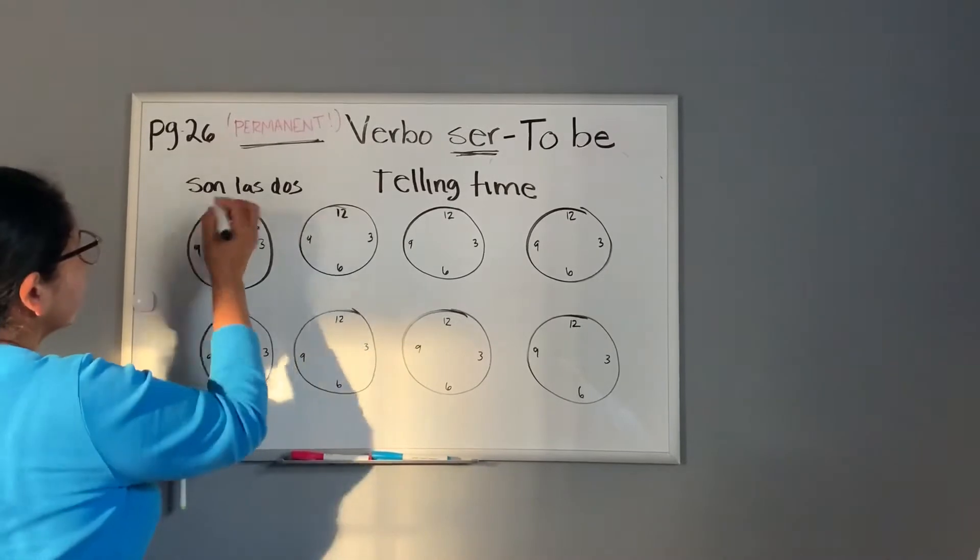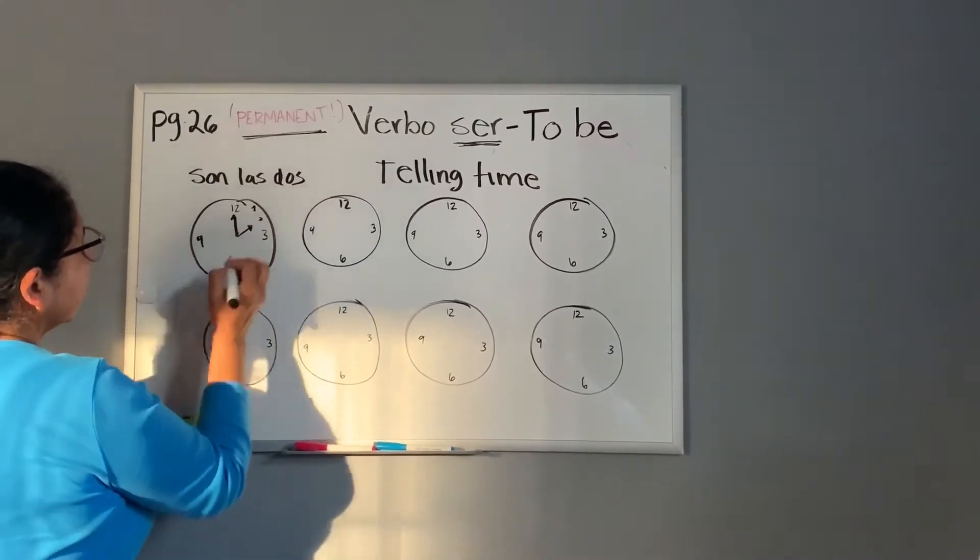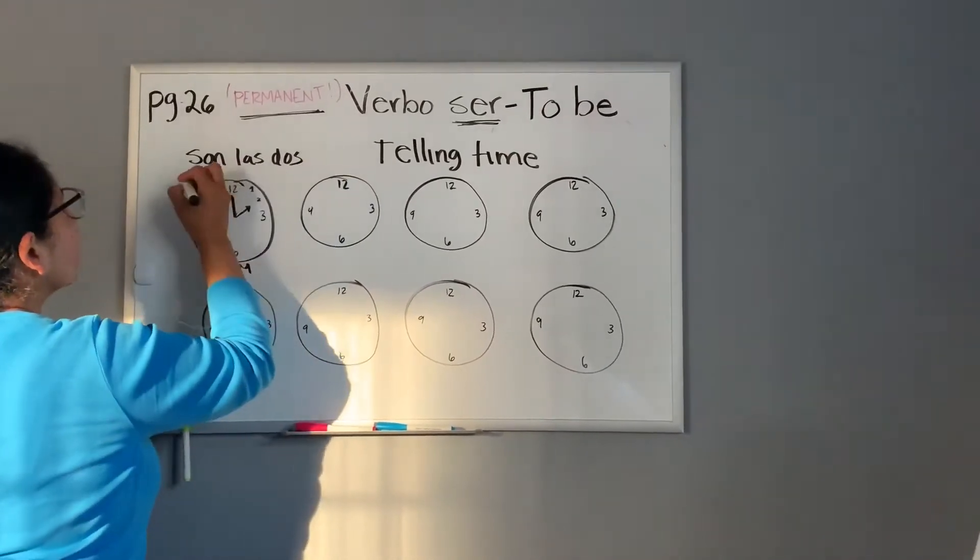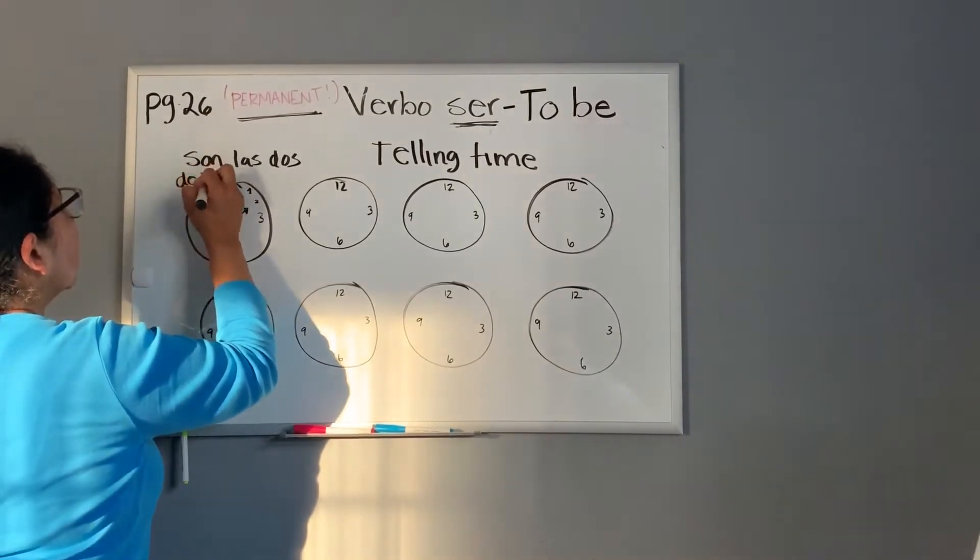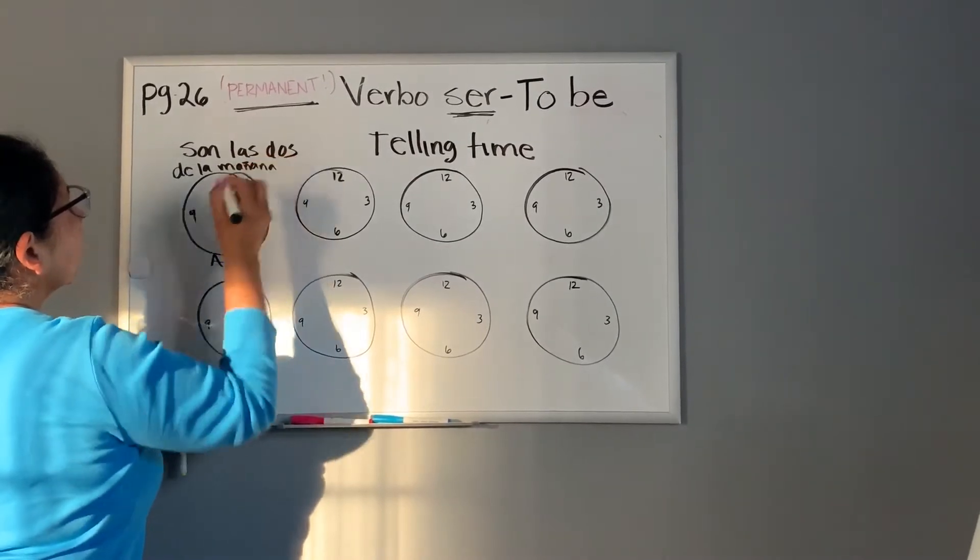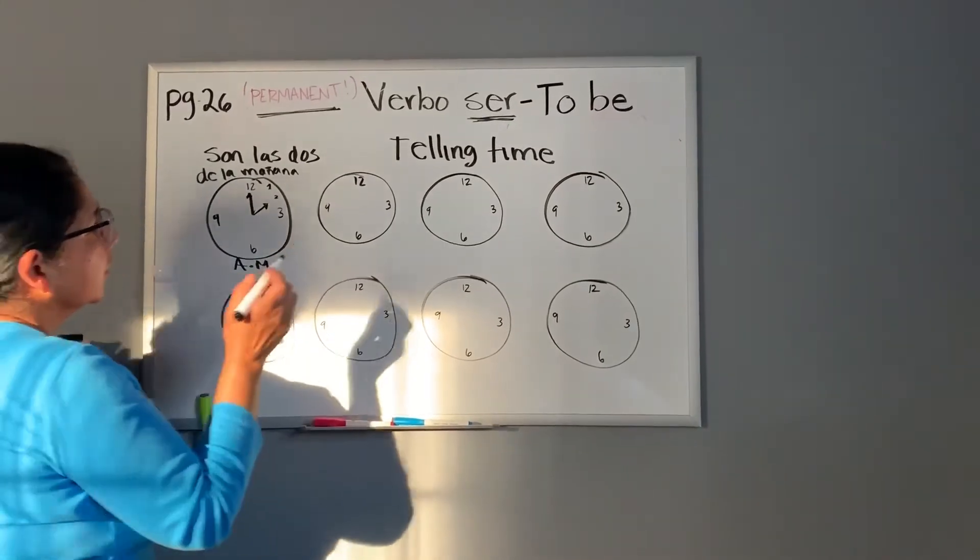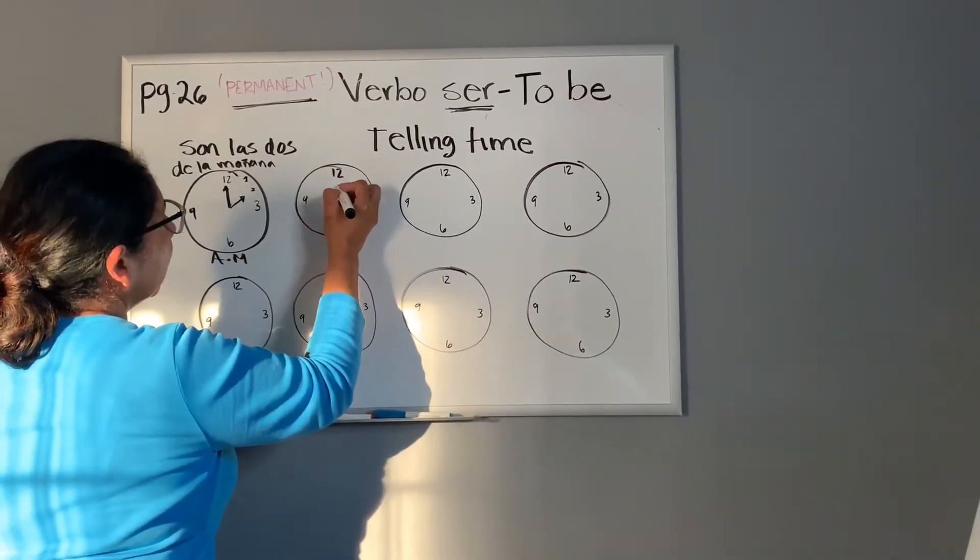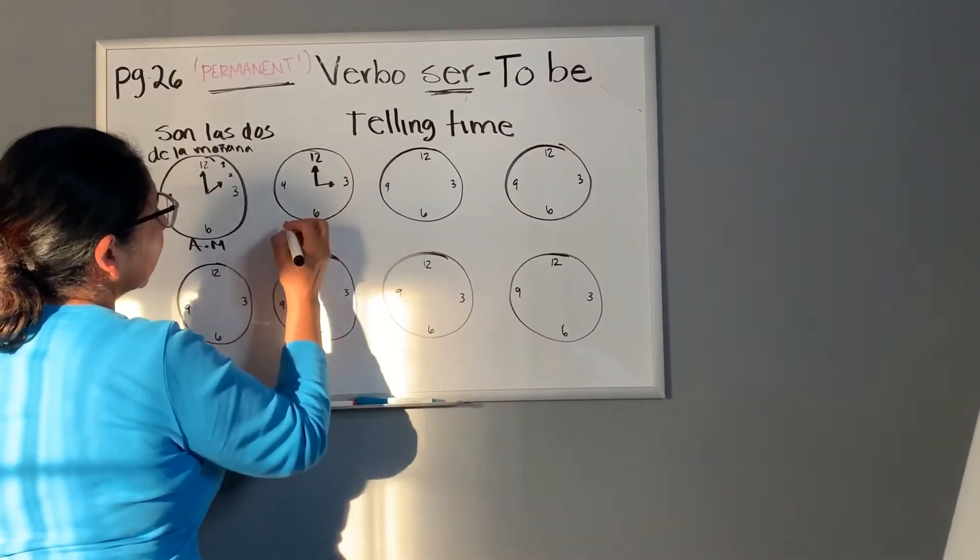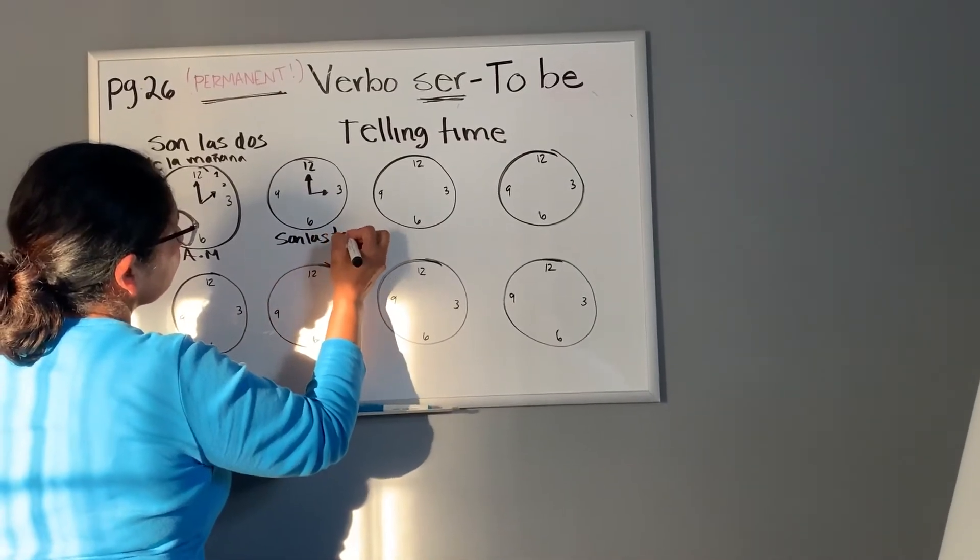You can say son las dos de la tarde, son las dos de la mañana. It all depends what time it is. If it is going to be a.m., you will say son las dos de la mañana. It's two o'clock in the morning. Okay. So, three o'clock, it will be son las tres.